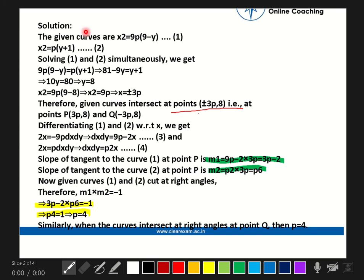Differentiating both equations we get: 2x = -9P(dy/dx), so dy/dx = -2x/9P, mark as equation 3. And 2x = P(dy/dx), mark as equation 4.